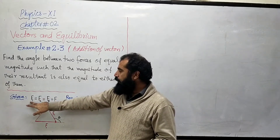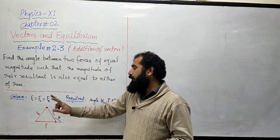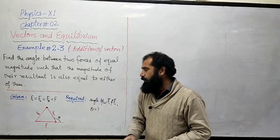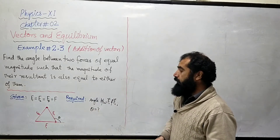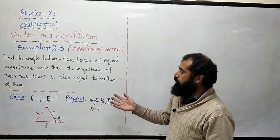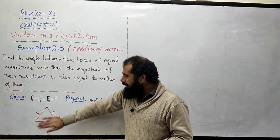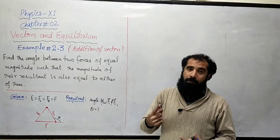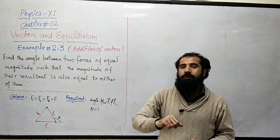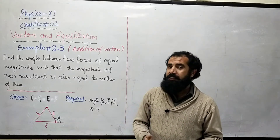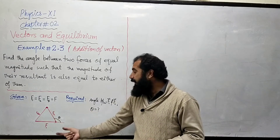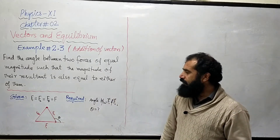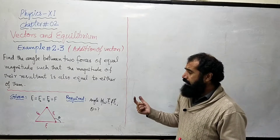I have given data here: F1 and F2 are equal to the resultant force. So I have to call all three of them F — meaning F1 = F2 = Resultant = F. Humein F1 aur F2 ke darmiyan angle chahiye, jo hai theta.